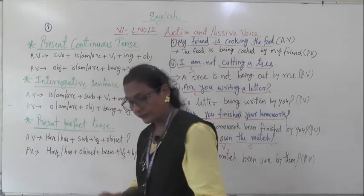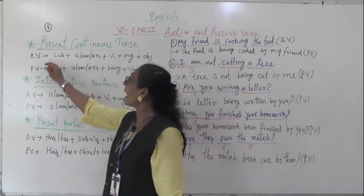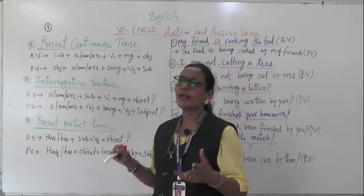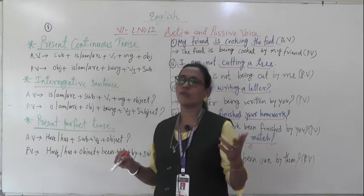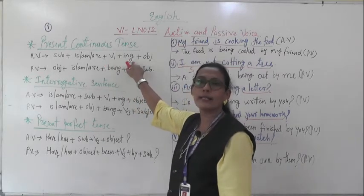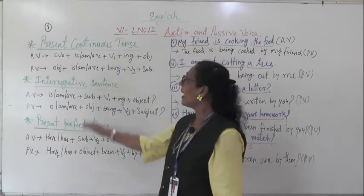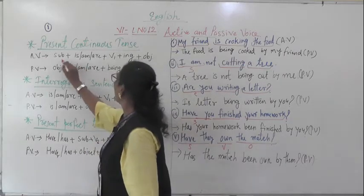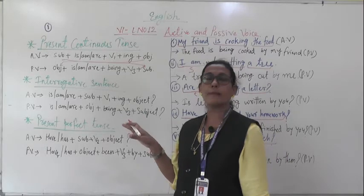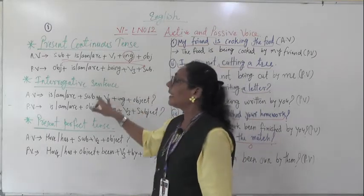In present continuous tense, the active voice structure is: Subject + is/am/are + V1+ING + Object. As it is continuous tense, we add ING — that is the only change. In the passive voice, the object will come first and the subject will go to the end. The same rule applies: subject becomes object and object becomes subject. The ING form that we are learning today indicates continuous tense.